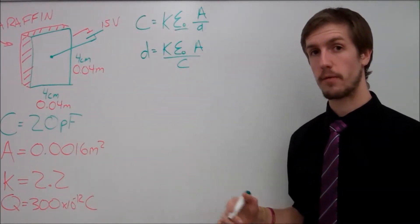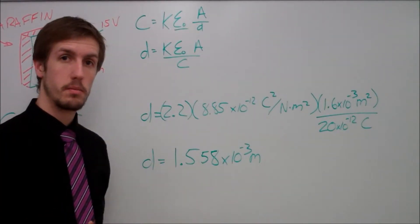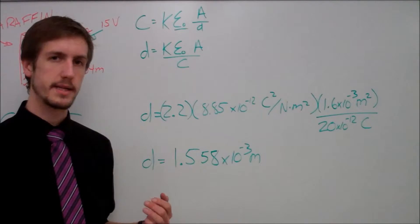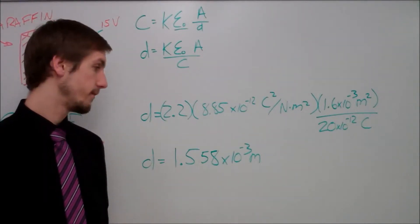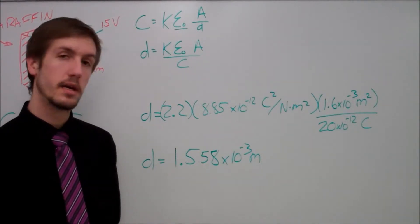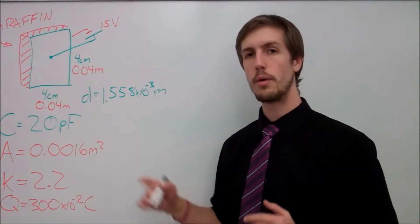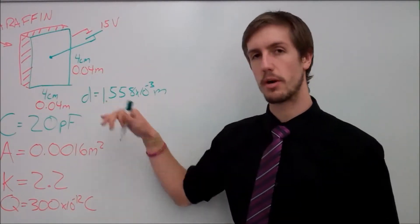Once I put everything back into our formula, this is what we're going to get, where now I have found out that my distance between our two plates is going to be 1.558 millimeters away, or 1.558 times 10 to the negative third meters. So now I've added one more piece to our puzzle, which is the distance between our plates.